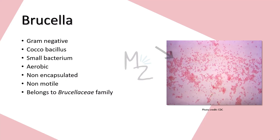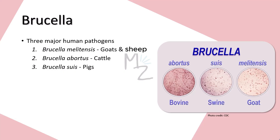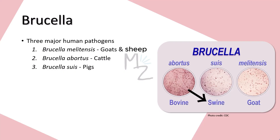Brucella is not a single bacterium — it's a group of bacteria. The three major human pathogens are: Brucella melitensis, found in goats and sheep; Brucella abortus, found in cattle (bovine — a group including cattle and buffaloes); and Brucella suis, found in pigs, also called swine. In the pictures you can see Brucella abortus associated with bovines, Brucella suis with swine, and Brucella melitensis with goats.